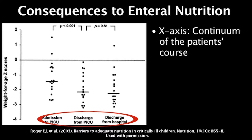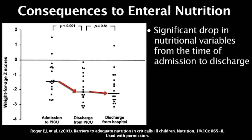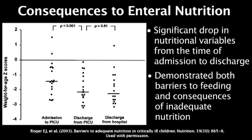The authors described the consequences of this failure of enteral nutrient delivery. Along the continuum of the patient's illness course on the x-axis, they showed a significant drop in nutritional variables — in this case, weight-for-age z-scores — from the time of admission to the pediatric ICU to discharge. Thus, they demonstrated not just the barriers to feeding children in their ICU, but also the consequences to their nutritional status.